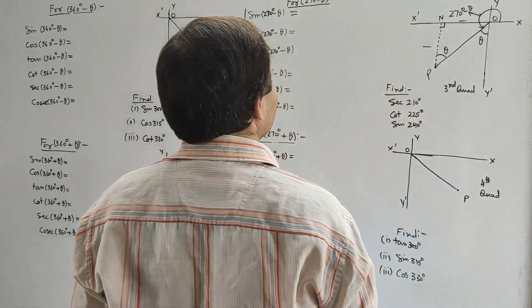For cos(270° - θ), the base is minus ON and hypotenuse is OP. For angle θ, ON is the perpendicular, so ON upon OP gives sin θ. Hence cos(270° - θ) = minus sin θ. For tan(270° - θ), perpendicular is minus PN and base is minus ON. This gives base upon perpendicular for angle θ, which is cot θ. So tan(270° - θ) = cot θ.